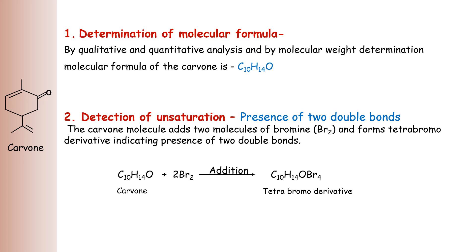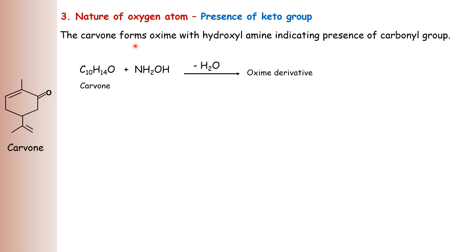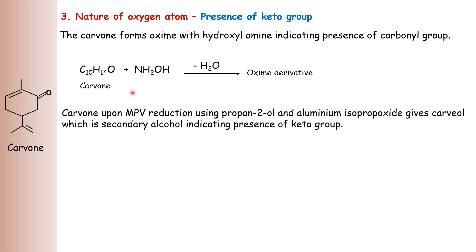The next evidence is the nature of the oxygen atom, which is in carbonyl form. Carvone forms an oxime with hydroxylamine, which indicates presence of a carbonyl group. It forms the same oxime derivative with hydroxylamine. Then, carvone upon MPV reduction using isopropanol and aluminum isopropoxide gives carvol, which is a secondary alcohol.